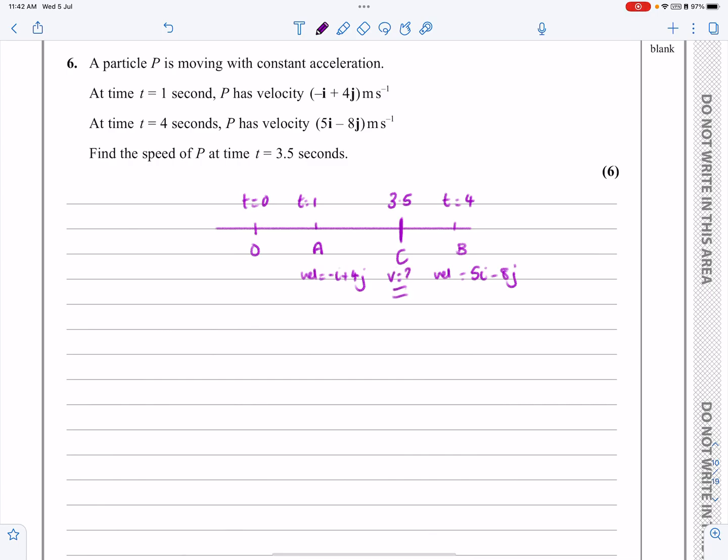At t equals four seconds, the velocity is 5i minus 8j. You don't need this diagram, but it puts everything in perspective. What we want is the velocity or rather the speed at three and a half seconds. I'll do a little asterisk to remind me at the end to find the magnitude.